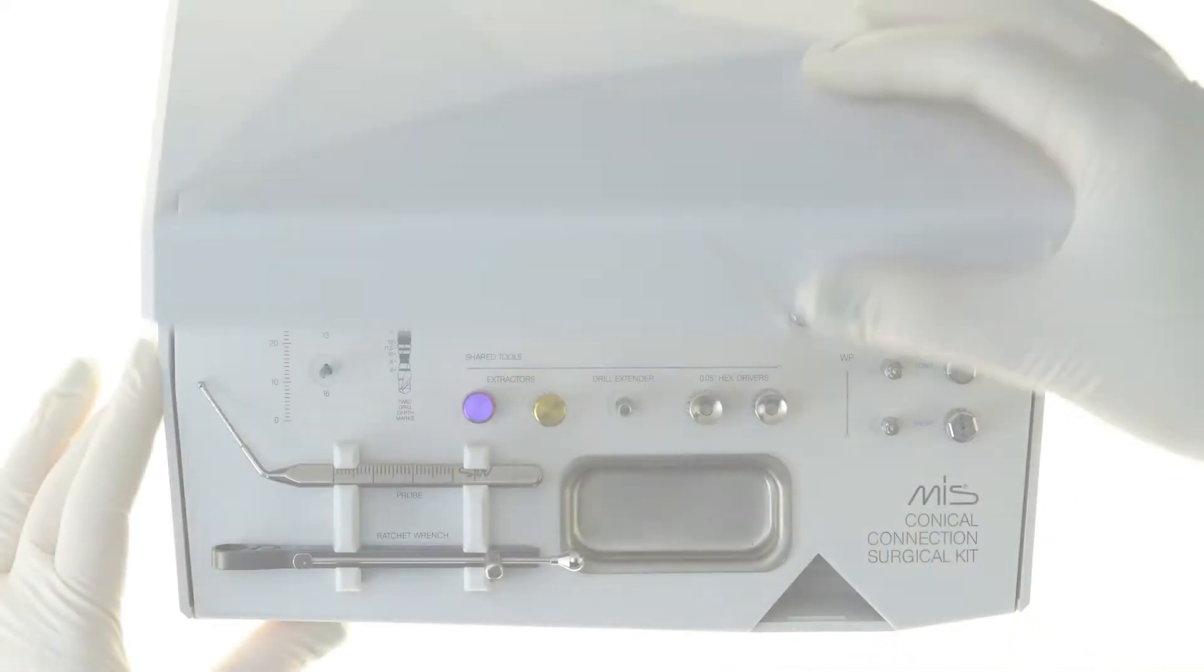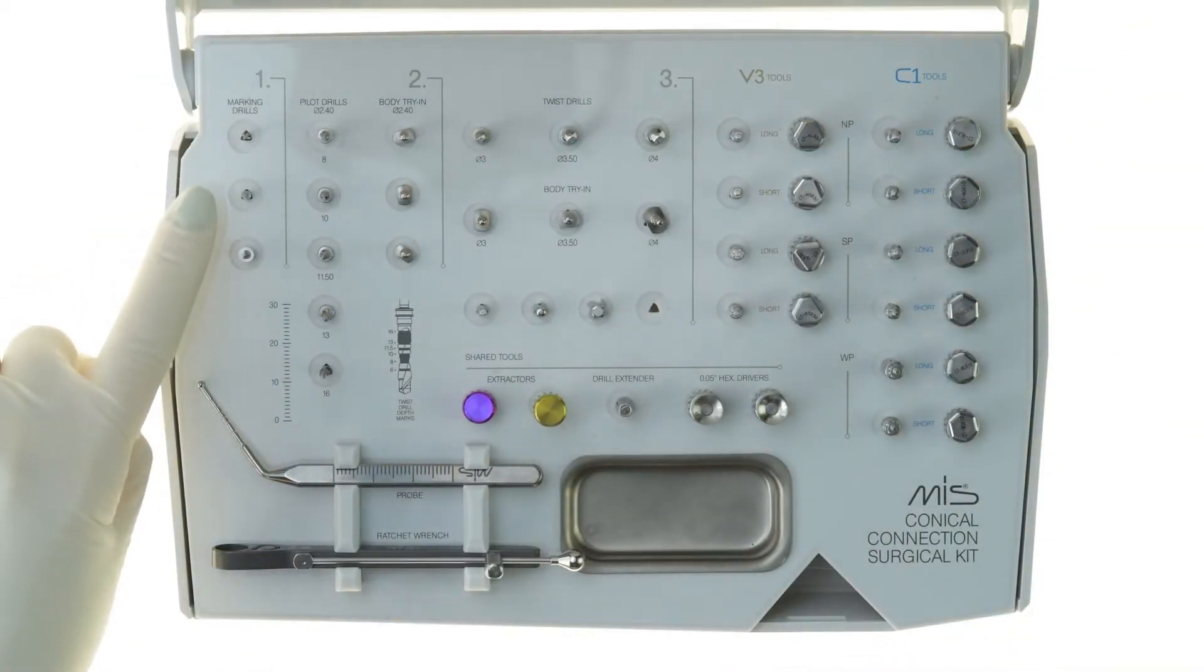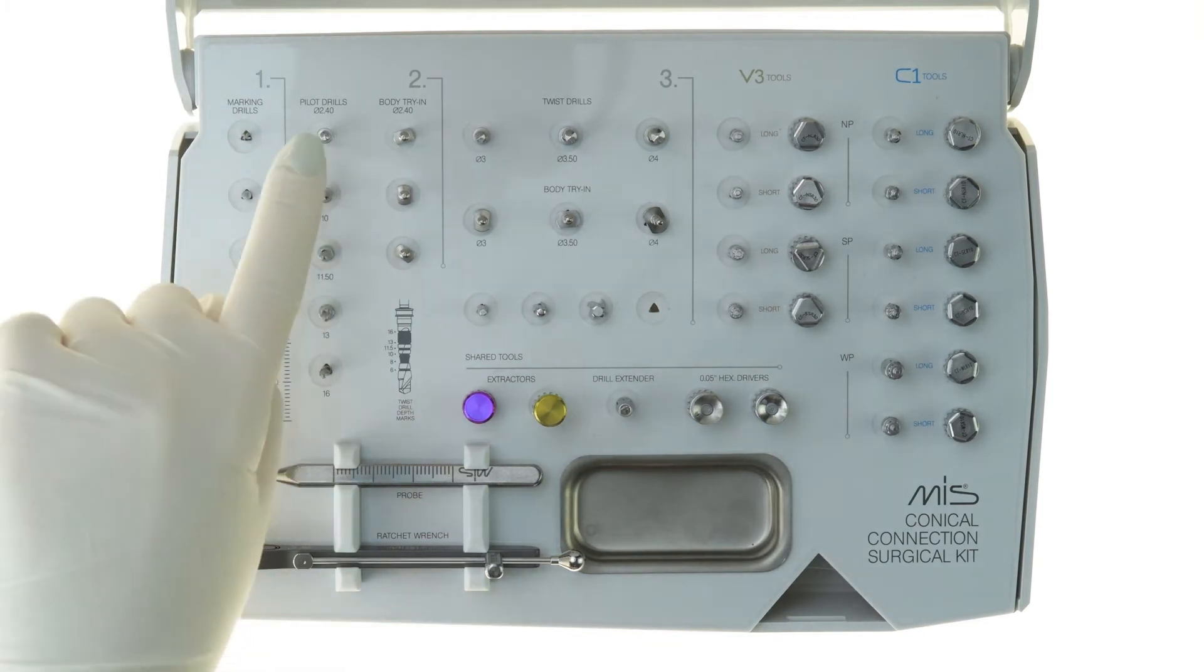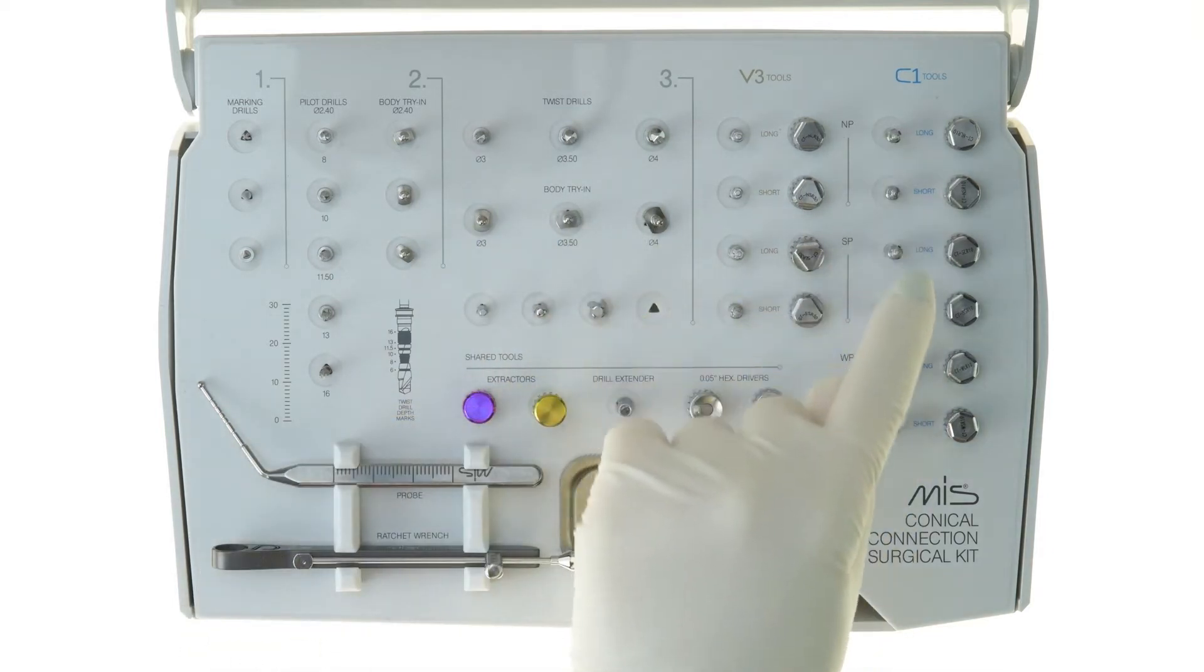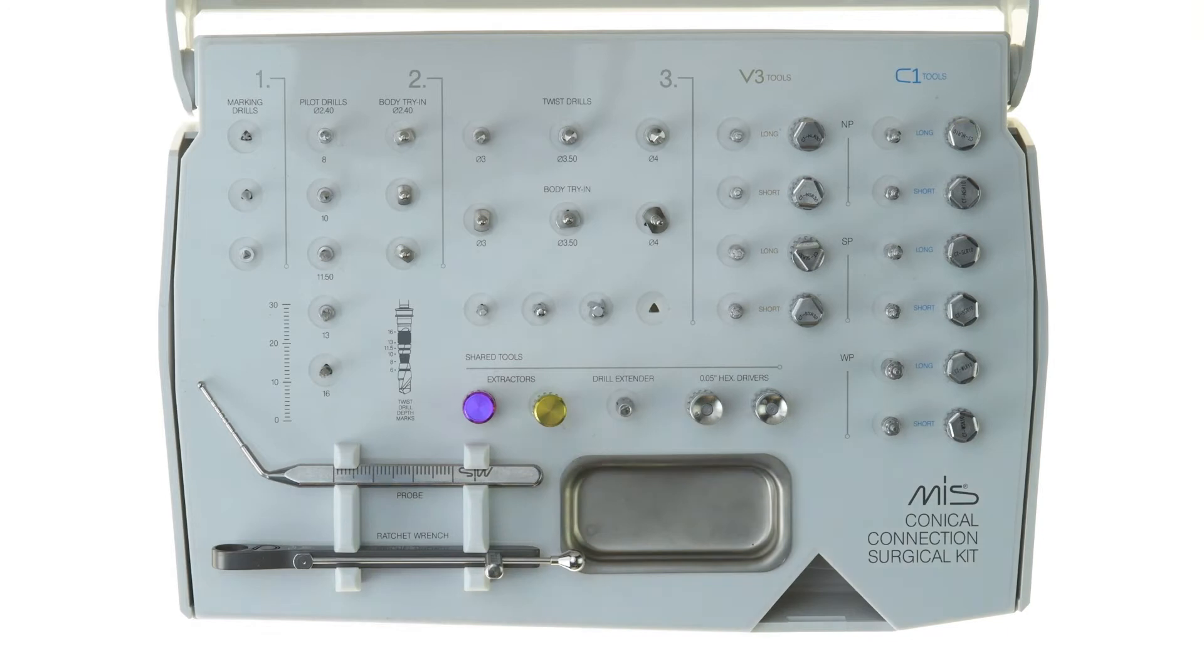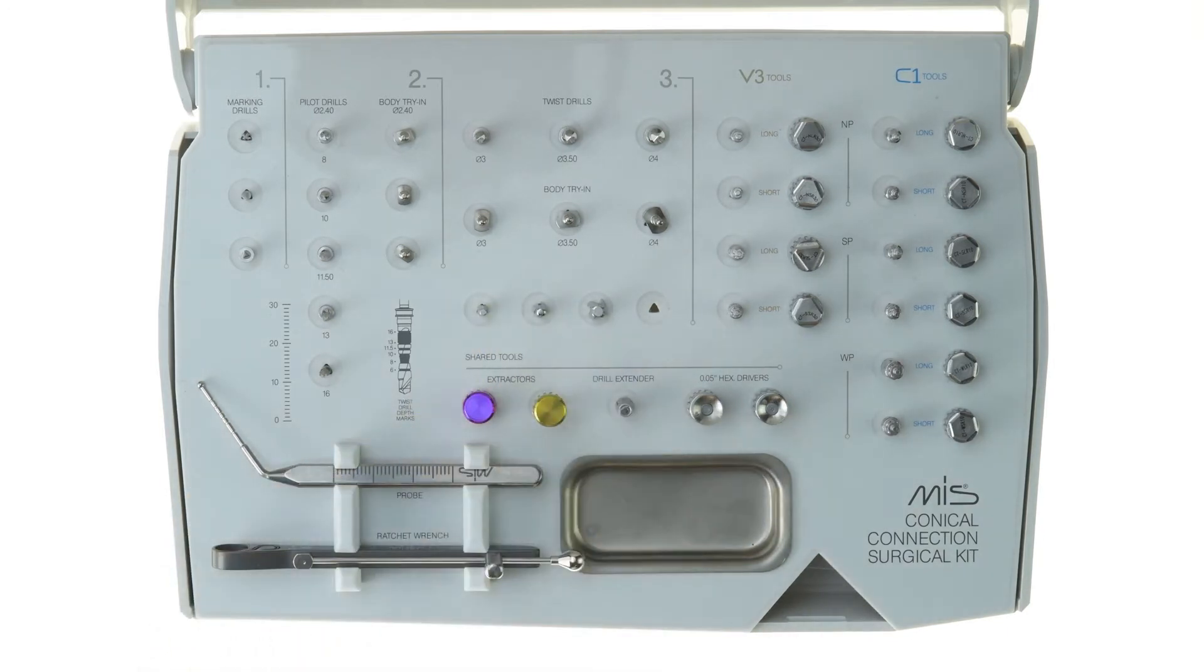The surgical kit includes all of the following items: marking drills, pilot drills with built-in stoppers, 2.4 mm body try-ins, step drills, body try-ins, C1 insertion tools, countersink drill for C1 placement procedure, prosthetic screwdrivers, drill extender, abutment extractors, probe, and a surgical ratchet wrench.